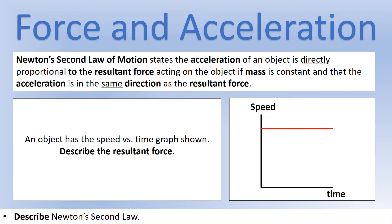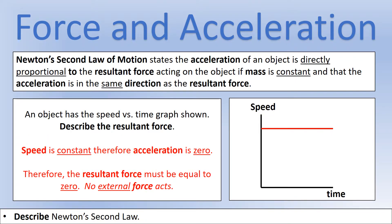Second graph: describe the resultant force. We can see the speed stays the same the whole time. That means the acceleration is zero, and if the acceleration is zero, the resultant force is zero — there's no force acting.